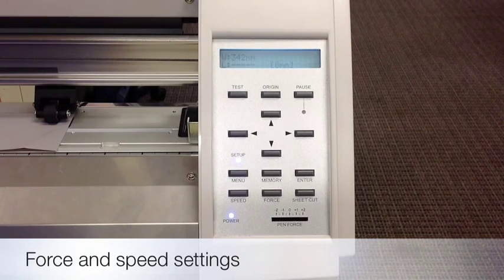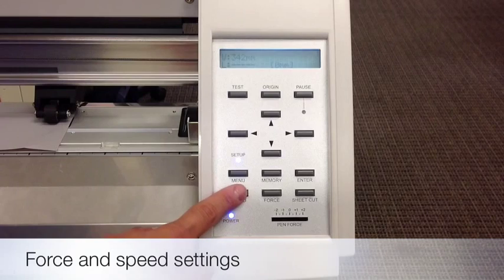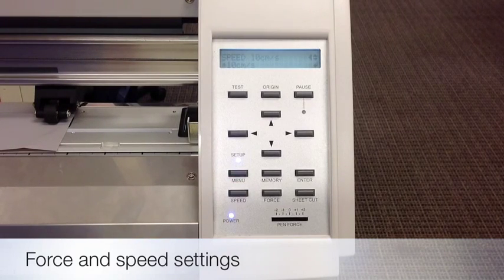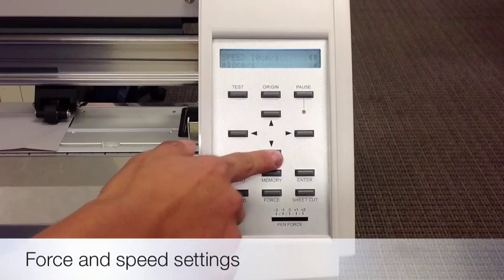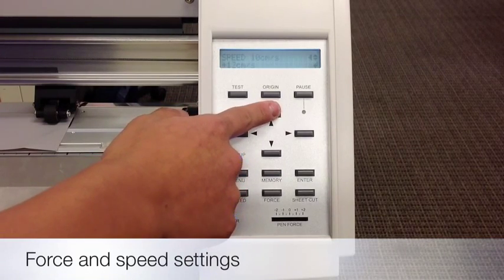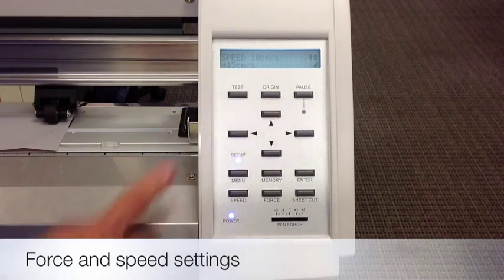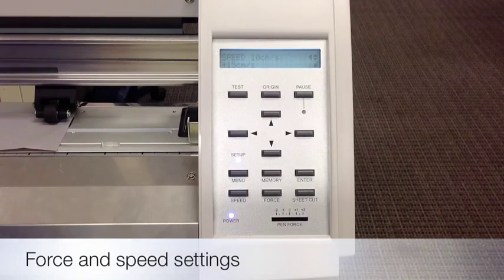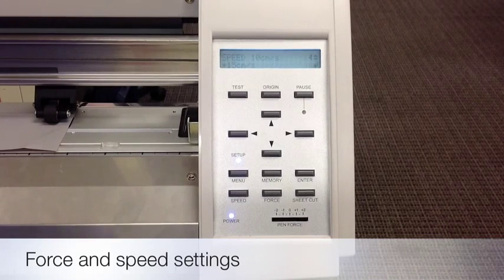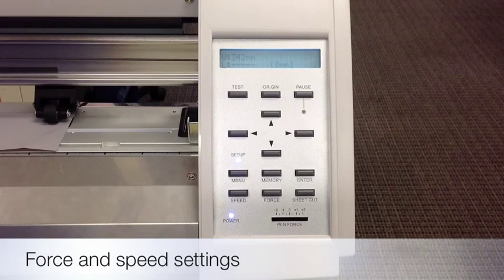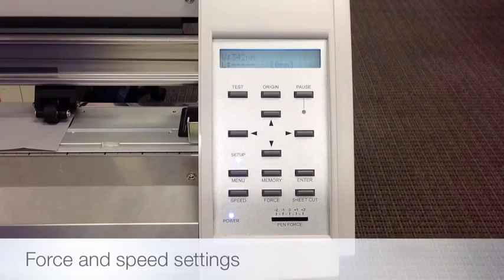You then must adjust your speed. Push the speed button once, and the speed should be adjusted to a number less than 20 centimeters per second. You can push the up or down arrows to adjust the speed. More intricate designs would require a lower speed. Simple designs could be cut at a faster speed. In this case, we're going to set it to 15 centimeters per second, and then we're going to push enter. Once the vinyl's loaded, your force and your speed are set, you're then ready to start cutting your vinyl design.